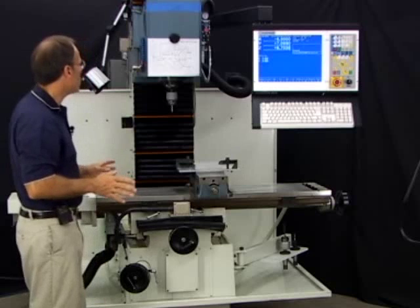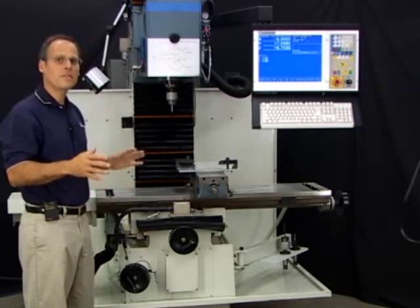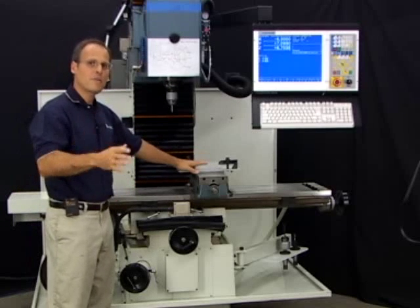So for this particular print, z zero is pretty easy. Most of the time, it's going to be the same on all your parts. It's going to be the top of your stock. So that's one out of the way.